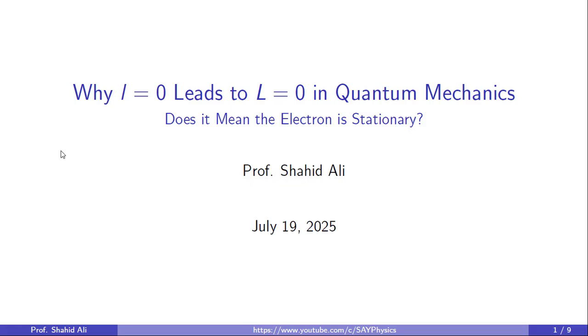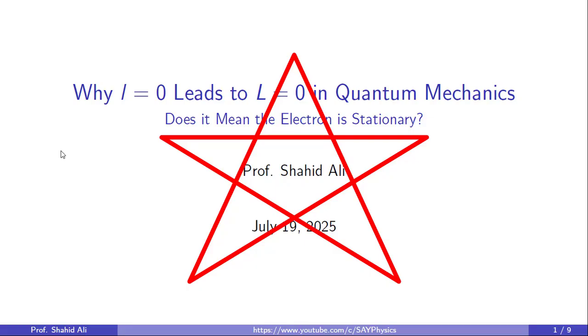Welcome to this tutorial titled Why small l equal to 0 leads to capital L equal to 0 in quantum mechanics. In this session, we will explore an interesting and often misunderstood concept in quantum mechanics, the connection between the quantum number l and the angular momentum L. We will also address a common question: if angular momentum L is equal to 0, does that mean the electron is completely stationary? Let us begin this journey into the quantum world by revisiting some fundamental ideas and breaking down what angular momentum really means at the quantum scale.